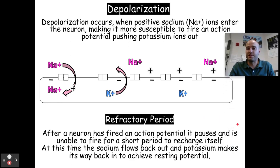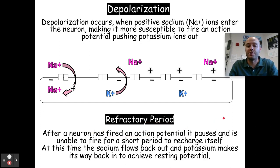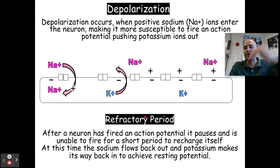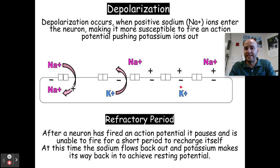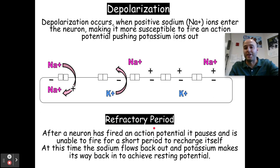After depolarization occurs and a message is sent, a neuron goes through something called the refractory period. After a neuron has fired, it pauses and is unable to fire again for a short period of time to recharge itself. Sodium flows out, and potassium makes its way back in to achieve resting potential. So when depolarization occurred, sodium flowed in and pushed potassium out. Now in the refractory period, potassium has to come back in and sodium is pushed out so it can achieve resting potential again.